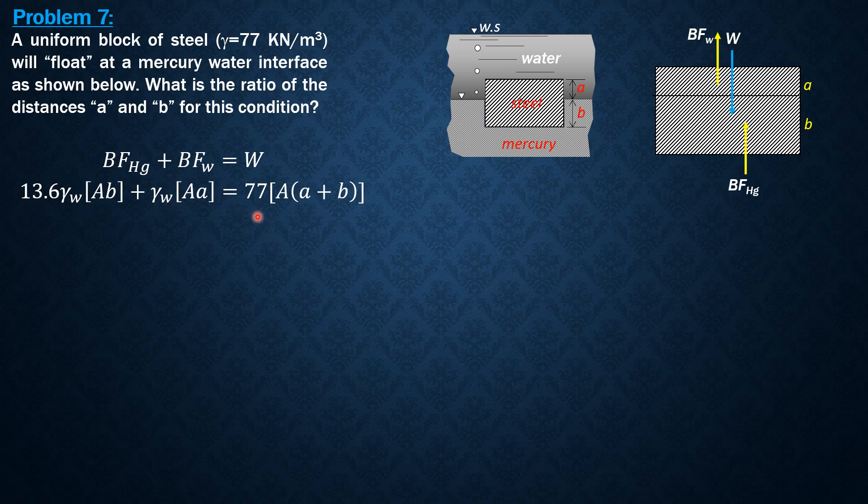On the right side, 77 over 9.81 and what is left is times quantity a plus b. So 13.6b plus a equals 77 over 9.81 times quantity a plus b.